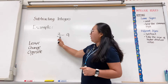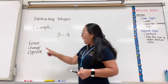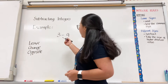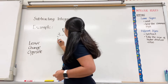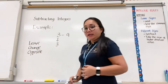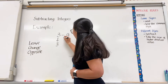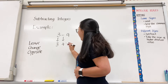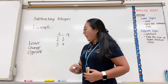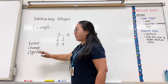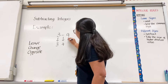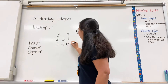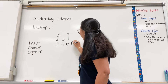So we have here example: 3 minus 4. Applying the Leave, Change, Opposite — we will leave 3, then change the operation from subtraction into addition, and then the next step is Opposite, so we get the opposite of positive 4, which is negative 4.